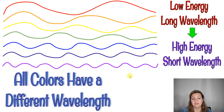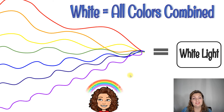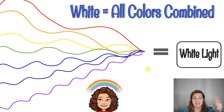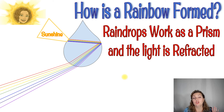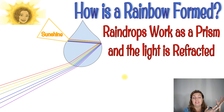When all the colors come together, they equal white light — which sounds crazy, but it's true. This is totally different from pigments and paints; we are talking about light here. We do receive white light from the sun. The sun looks yellow to humans, but it actually emits white light to Earth.